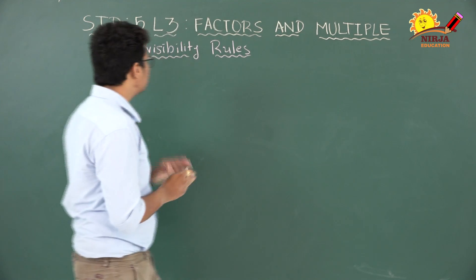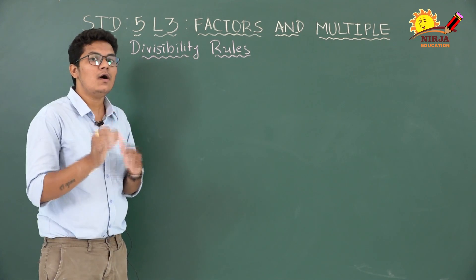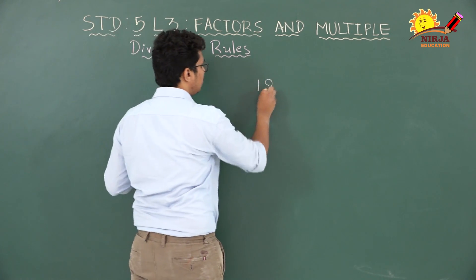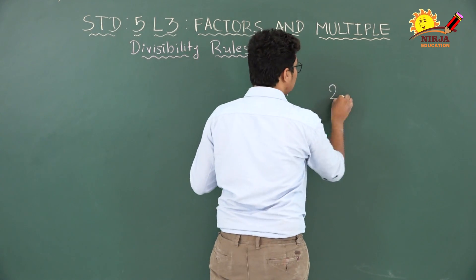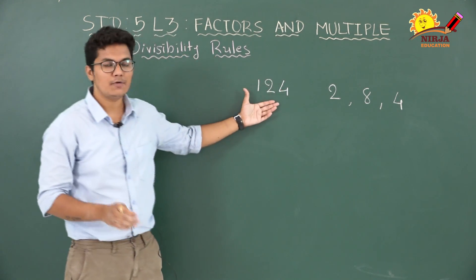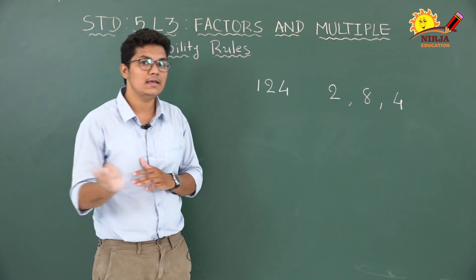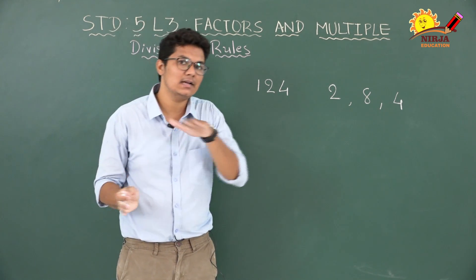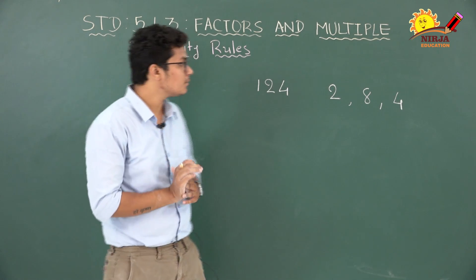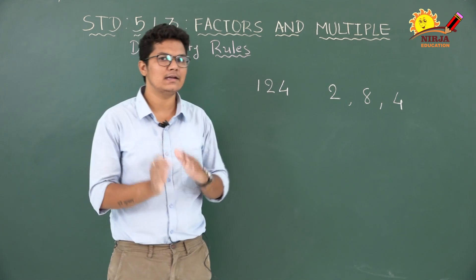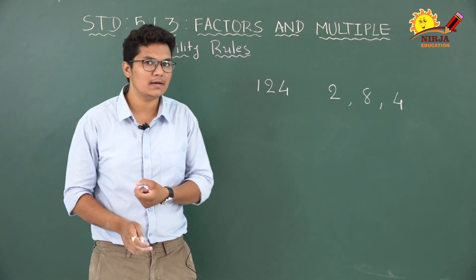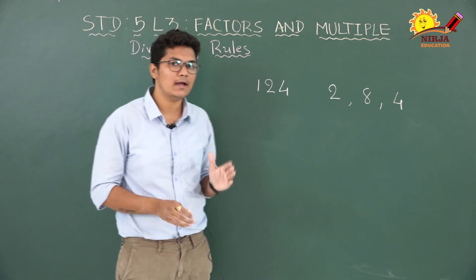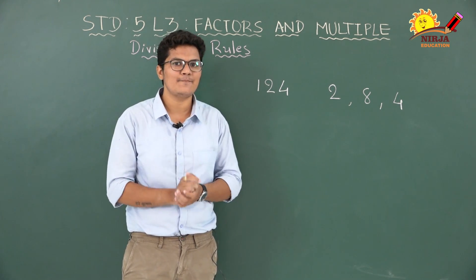Let's start our today's topic: Divisibility Rules. What are divisibility rules? Whether a given number is divisible by another number or not — that we can know after learning these rules. For example, 124: is it exactly divisible by 2, 8, or 4? After reading these rules, you can find out whether a number is exactly divisible by another number without actually doing the division. For example, can 8 exactly divide 124 — meaning with 0 remainder — we can find that out without doing the division.